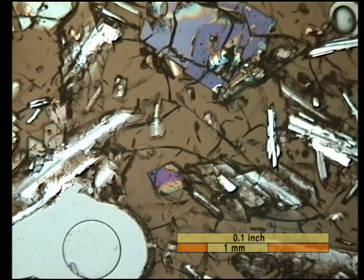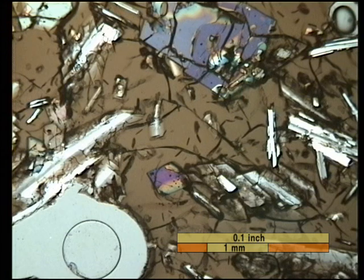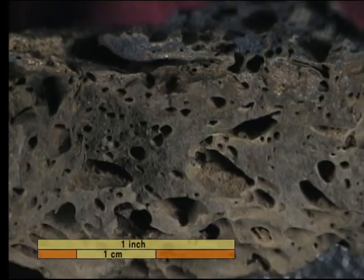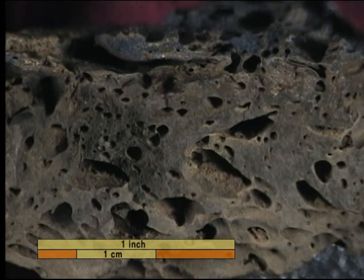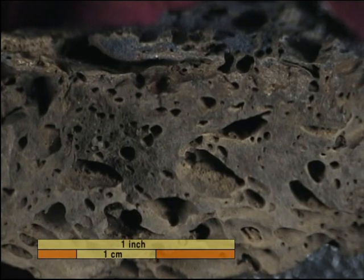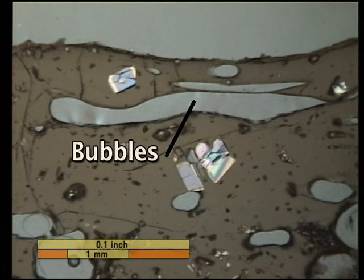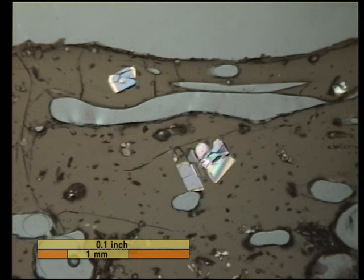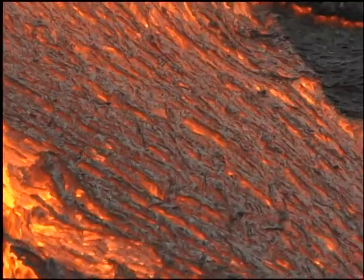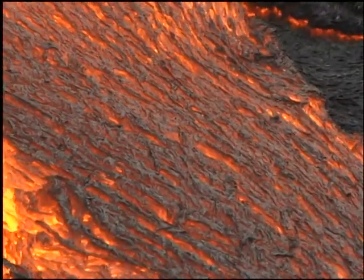As the flows continue to cool, more crystals form and the viscosity increases greatly. Many of the bubbles escape and the remaining ones coalesce into larger bubbles. Bubbles in the interior of these flows are elongated rather than spherical. Stretched and torn bubbles at the surface give these viscous pahoehoe flows a spiny texture.